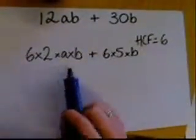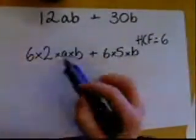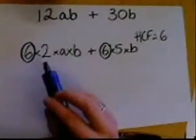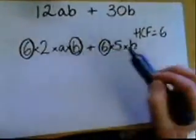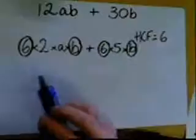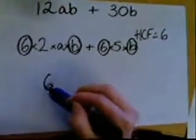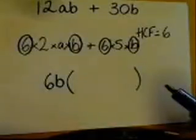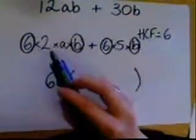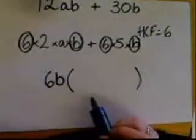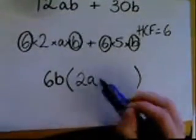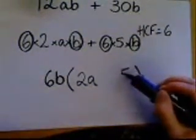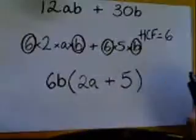Now what's common in this term expanded and this term expanded? There's a 6, we can circle a 6. There's no 2's, no A's, but there's a B. So we'll circle the B in both. Now everything we've circled we write on the outside of the brackets. So we've got 6b on the outside. Put the brackets in. On the left side, the first term, we've got 2a which is left. So we'll write 2a as our first term. And our second term, we've got 5, so we're just going to write a 5 in. Put the plus in as well.